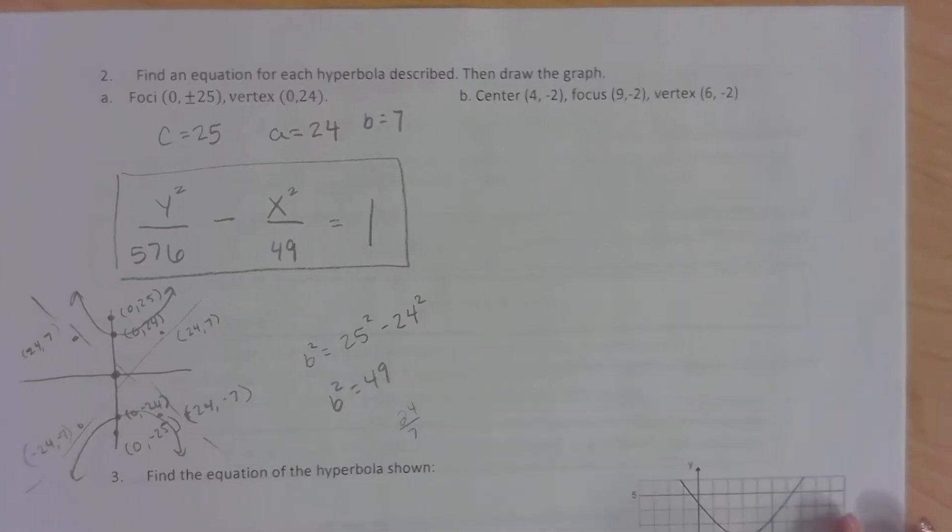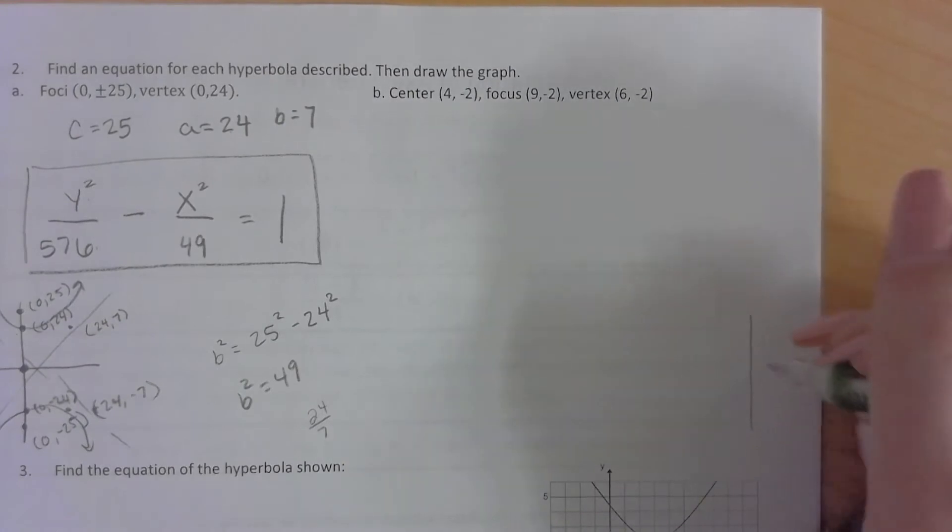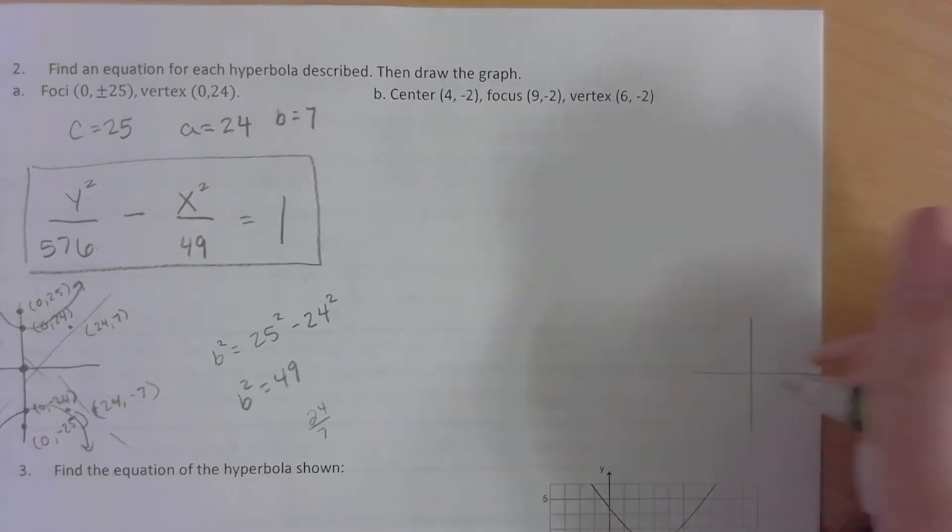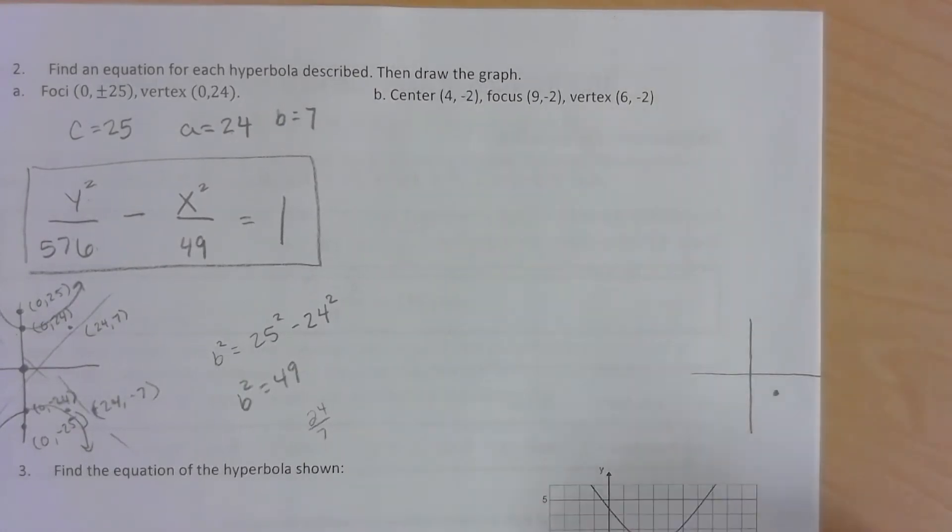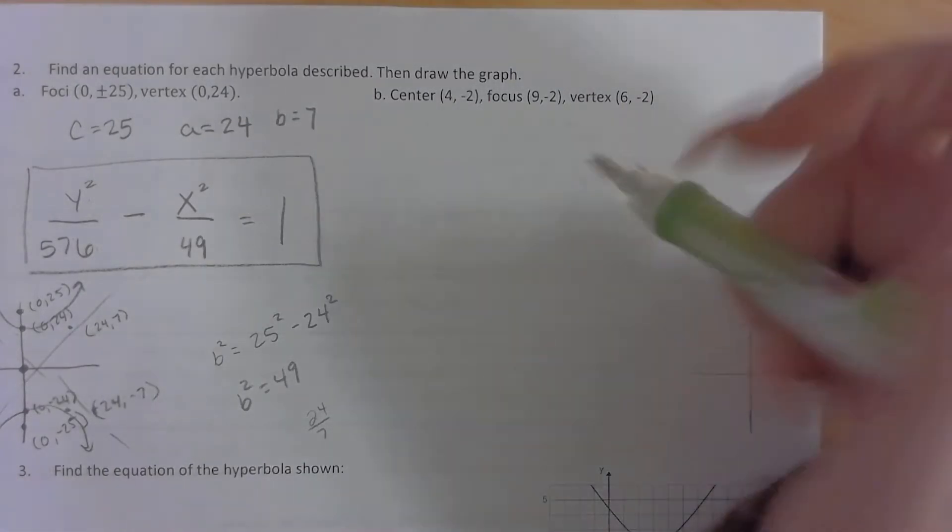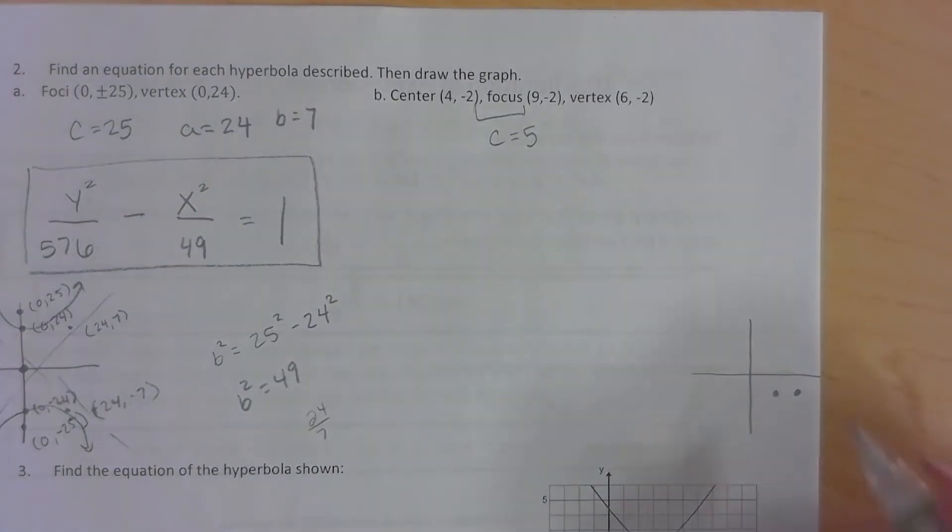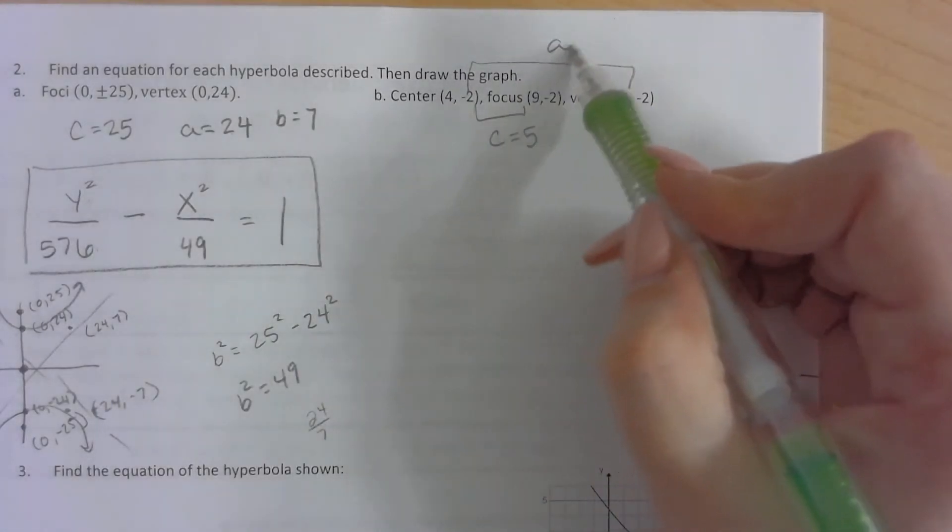So b, it's not going to be centered at 0, 0. It's centered at 4, negative 2. So 4, negative 2. Then we're at 9, negative 2 for a focus. So that tells us that c is 5. And we're at 6, negative 2 for the vertex, which tells us that a is 2.